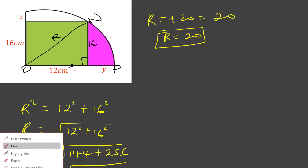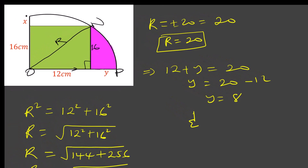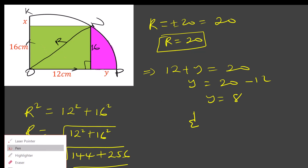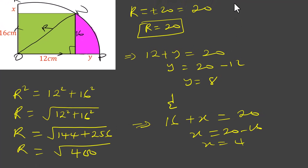We can equate OP to 20. So 12 plus Y equals 20, therefore Y equals 20 minus 12, which is 8. Similarly, the other side equals 16 plus X, and that is also a radius, so 16 plus X equals 20. Therefore X equals 20 minus 16, which is 4.